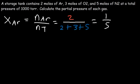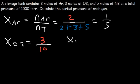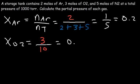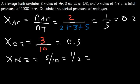The mole fraction of O2 is three moles of oxygen out of a total of 10 moles, so that's 3 over 10. For N2 it's 5 over 10, which is one half. Converting to decimals: argon is 0.2, O2 is 0.3, and N2 is 0.5. Those are the mole fractions of each gas.